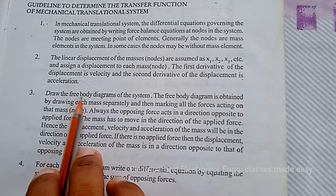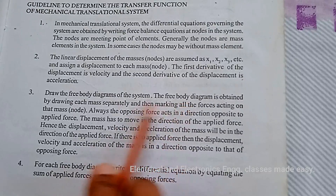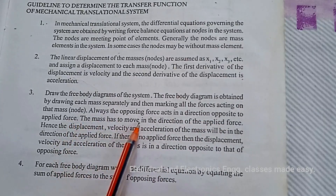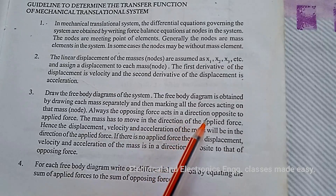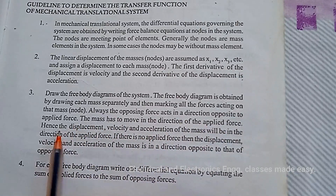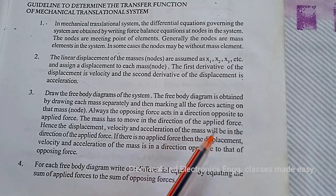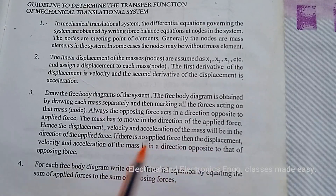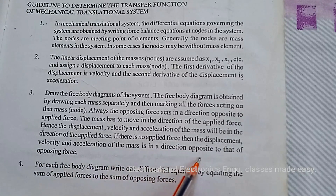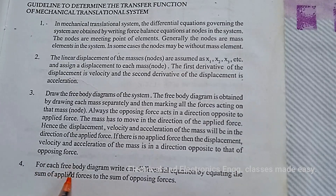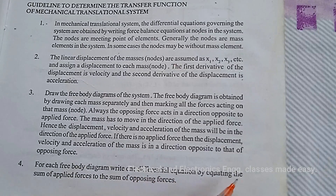Next, draw the free body diagrams of the system. A free body diagram is obtained by drawing each mass separately and marking all the forces acting on that mass. The opposing forces act in a direction opposite to the applied force. The mass moves in the direction of the applied force, so displacement, velocity, and acceleration will be in the direction of the applied force. If there is no applied force, displacement, velocity, and acceleration are in the direction opposite to the opposing force. For each free body diagram, write one differential equation by equating the sum of applied forces to the sum of opposing forces.